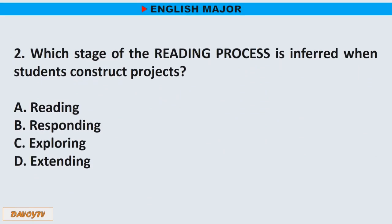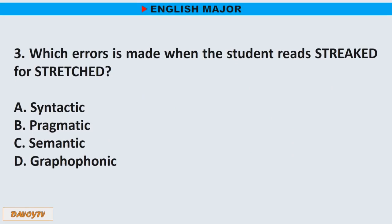Question number 2. Which stage of the reading process is inferred when students construct projects? Question number 3. Which error is made when the student reads 'streaked' for 'stretched'? A. Syntactic. B. Pragmatic. C. Semantic. D. Graphophonic. The correct answer is letter D. Graphophonic.